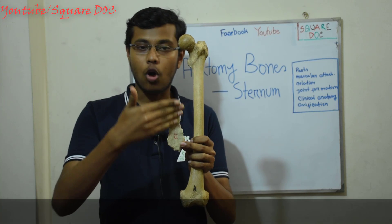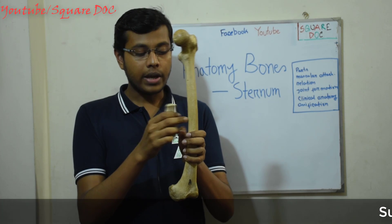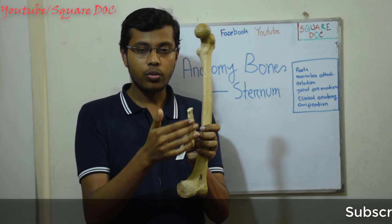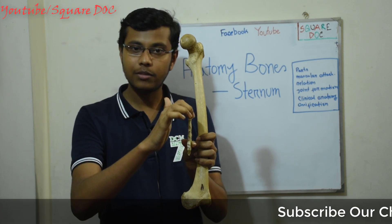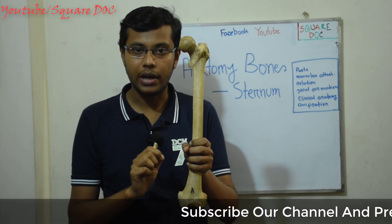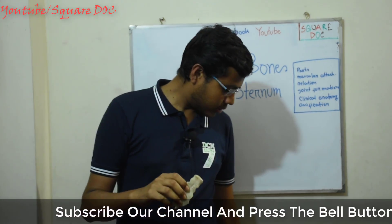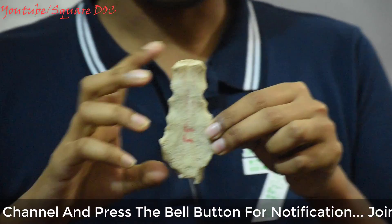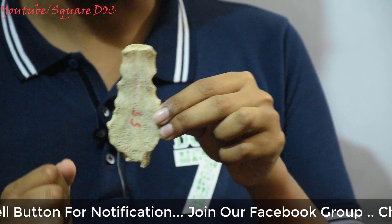The body of the sternum is composed through the layers. The outer layer is compact, then the middle layer is spongy. In the sternum, the arrangement is: compact layer, then spongy layer, then compact layer again. The bone is long and flat, and the sternebrae fuse to form the sternum body.